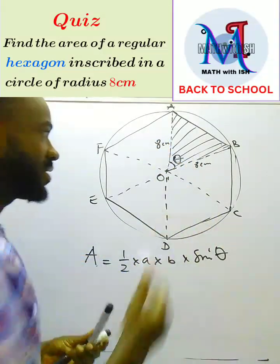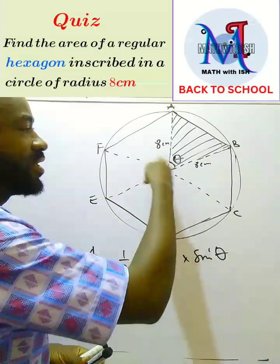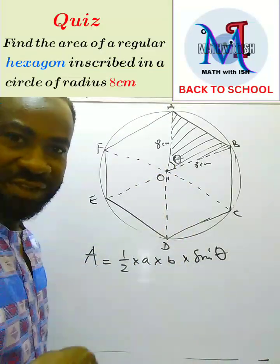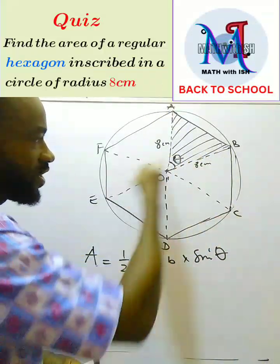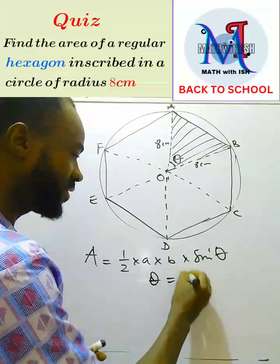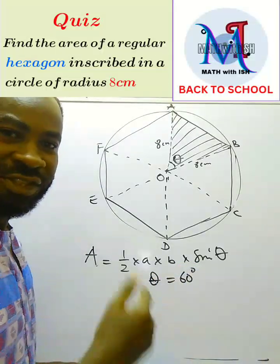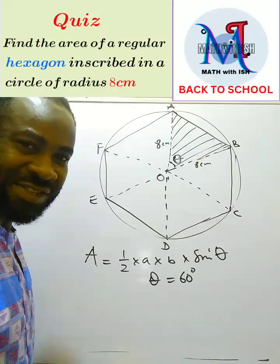The a and b are the two sides and then θ is the angle. Now remember the angle at the center is 360°, so if 360° is divided into six equal parts, that is 60°, which means that our θ is equal to 60 degrees. So now let's slot everything into this formula and see the result.